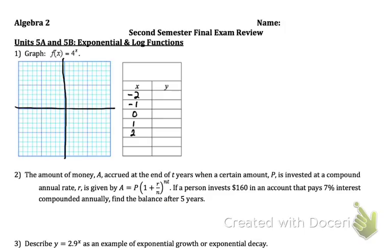Plug those into the equation. So for example, you'll put 4 to the negative 2 in your calculator or do it in your head. And that will go here. And then 4 to the negative 1 goes here. So on and so forth. And then you plot these points. In the end, your graph should look something like this going up.